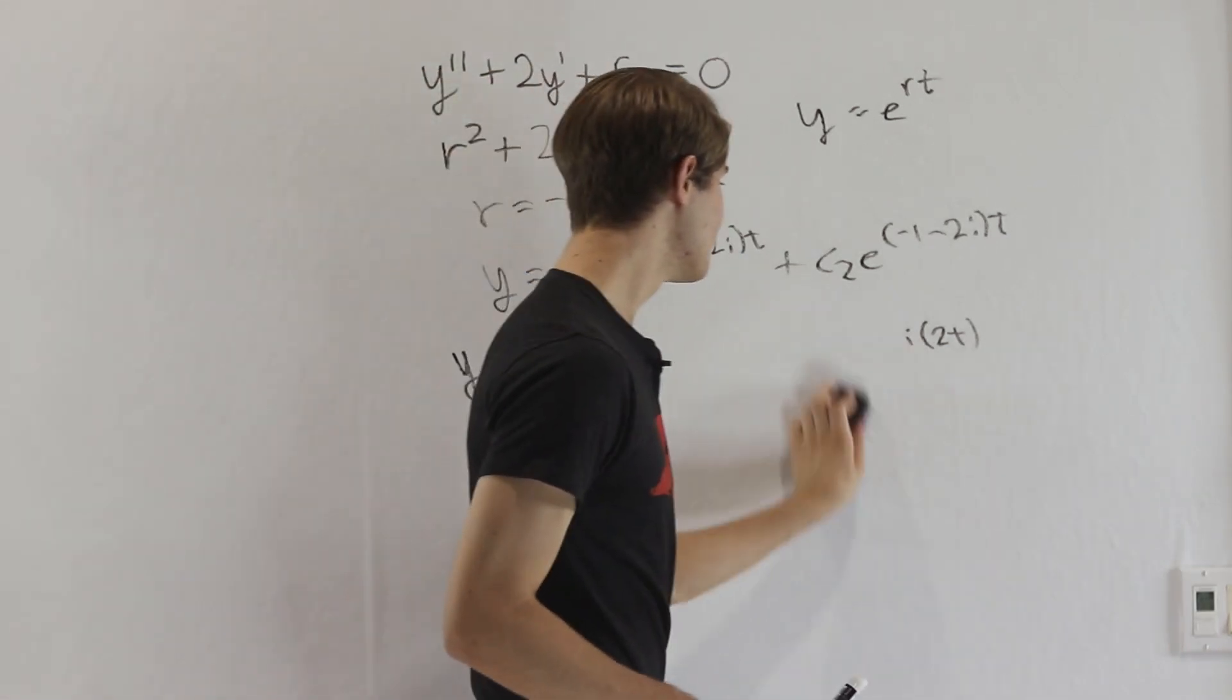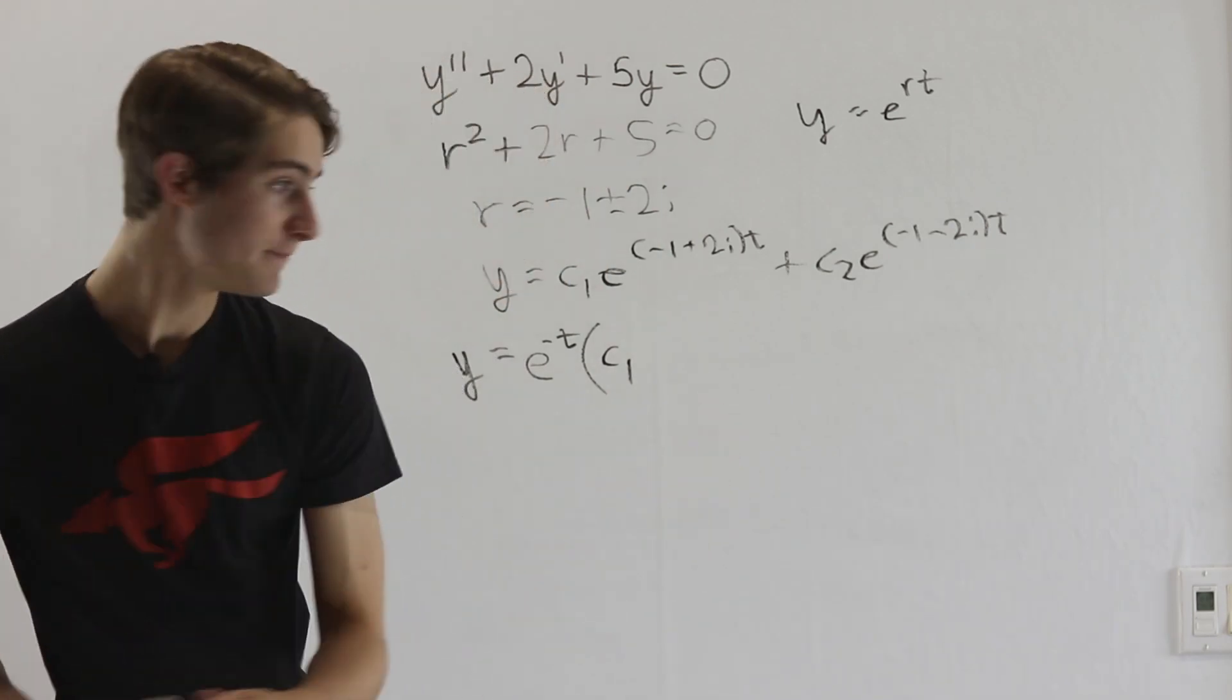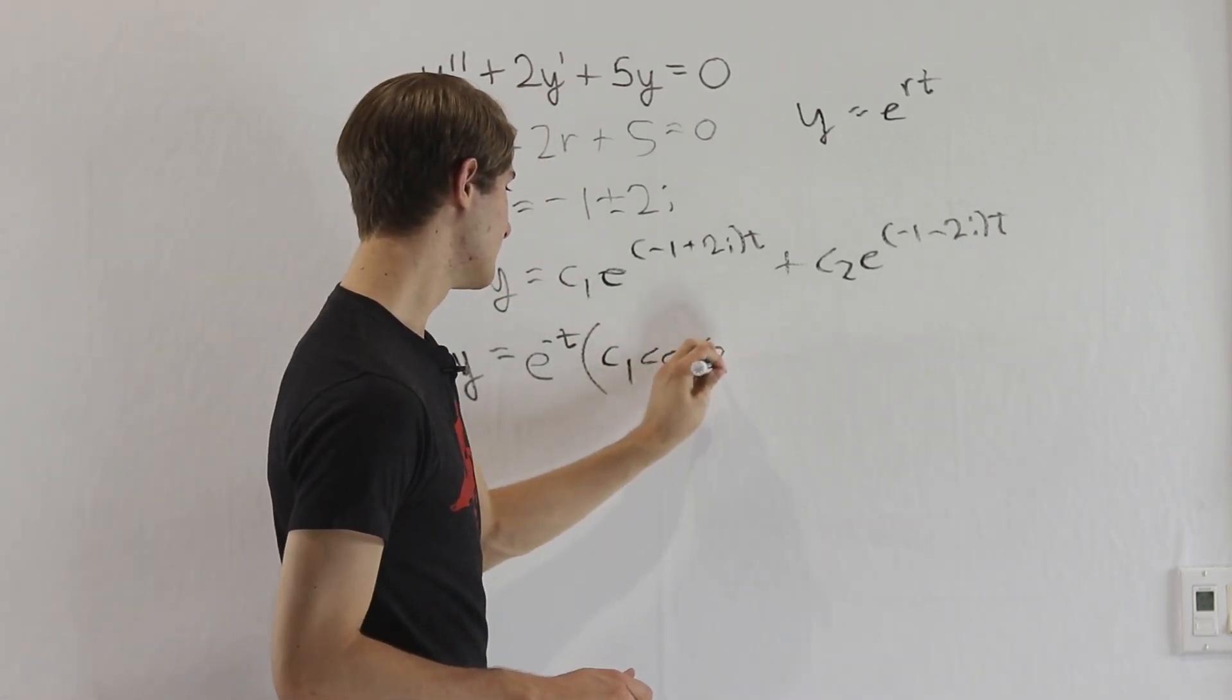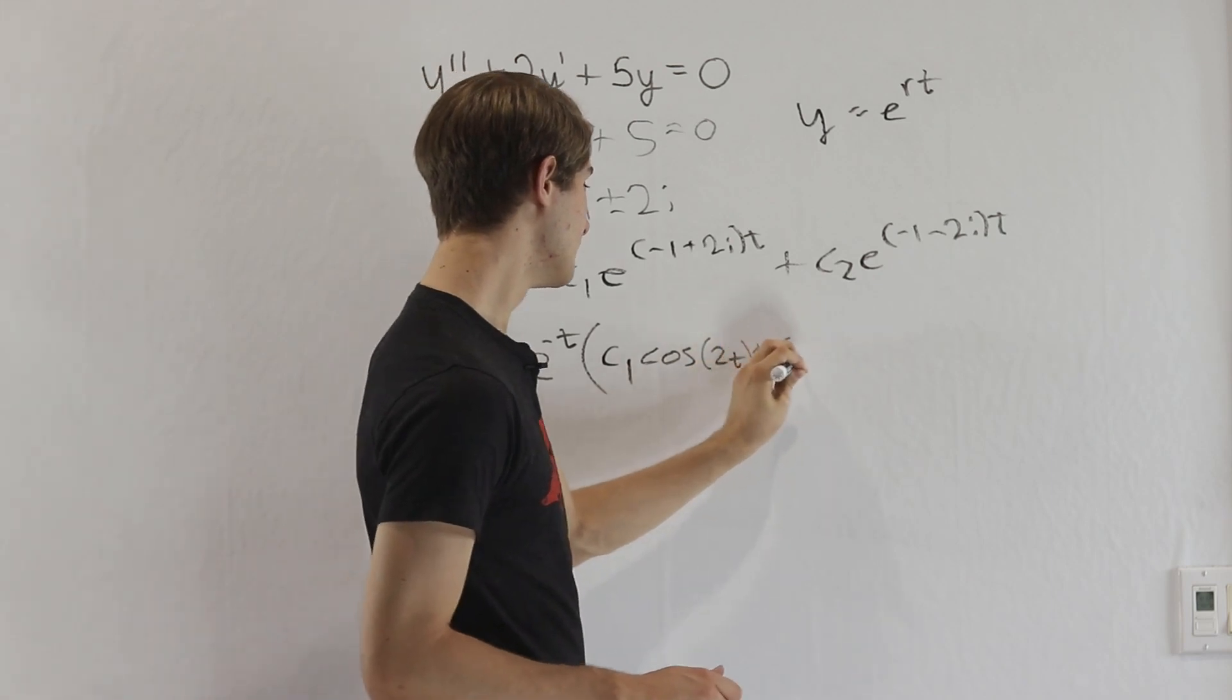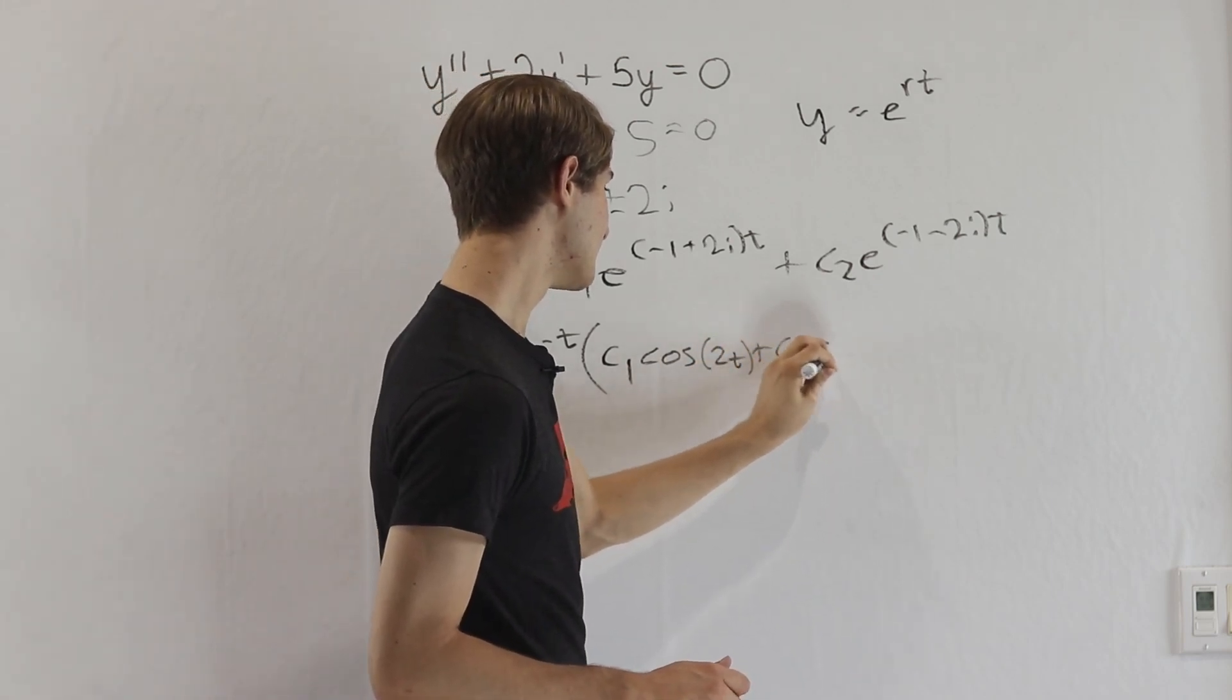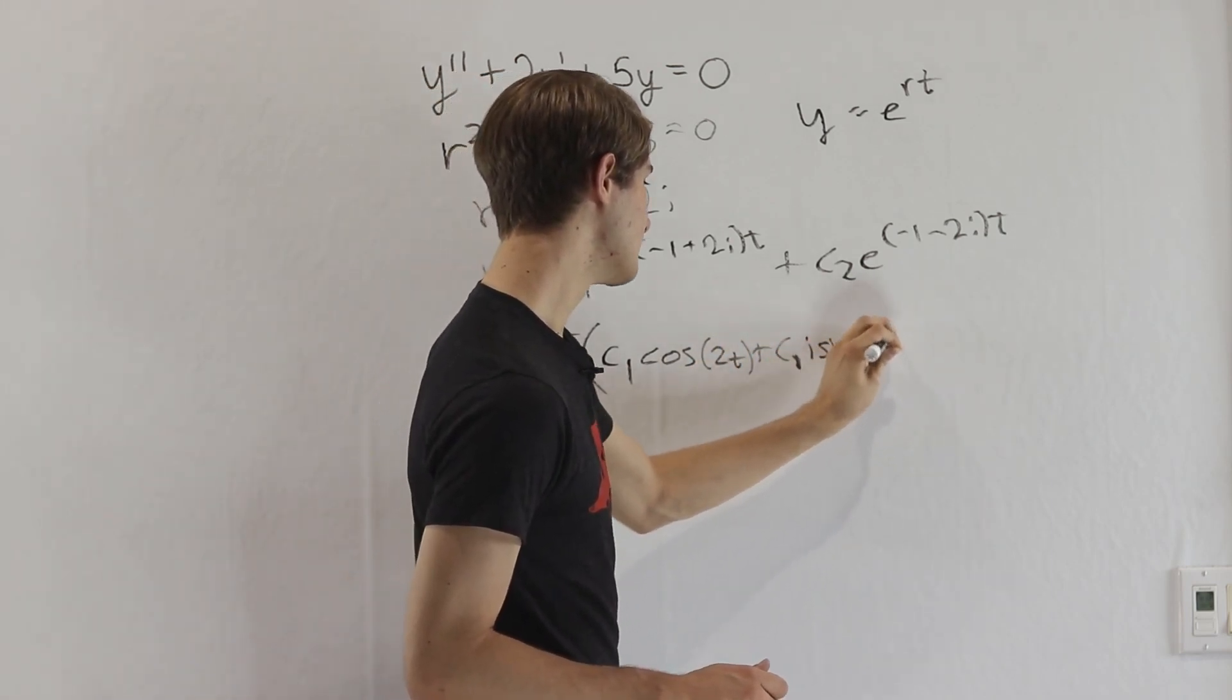So we can actually go back to our original equation here and write c1 cosine of 2t and then c1 i sine of 2t, just like that.